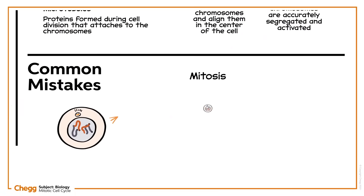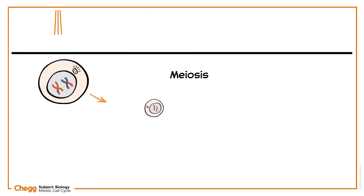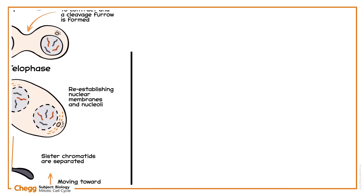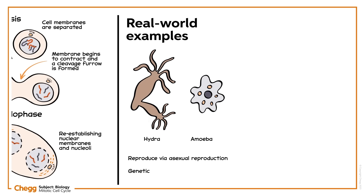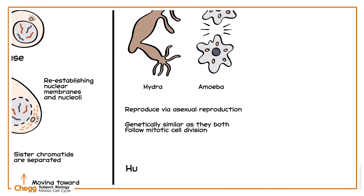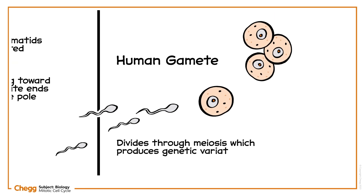Remember, mitosis is an equational division where the number of chromosomes is restored, whereas meiosis is a reductional division in which the number of chromosomes is reduced to half in the daughter cells compared with the mother cell. Thus amoeba and hydra, organisms that reproduce via asexual reproduction, are genetically similar because they follow mitotic cell division, whereas human gametes are produced through meiosis, which results in genetic variation.